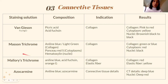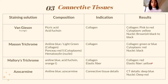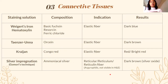We also have azocarmine, which contains aniline blue and is non-specific for connective tissue details. For elastic fibers specifically: Weigert's iron hematoxylin with ferric chloride produces dark blue elastic fibers. Taenzer-Unna — containing orcein from lichens — produces dark brown color for elastic fibers. Congo red is also used for elastic fibers and is red in color.